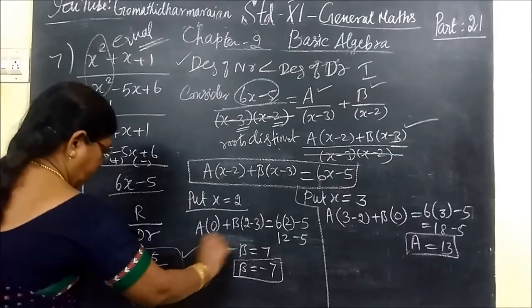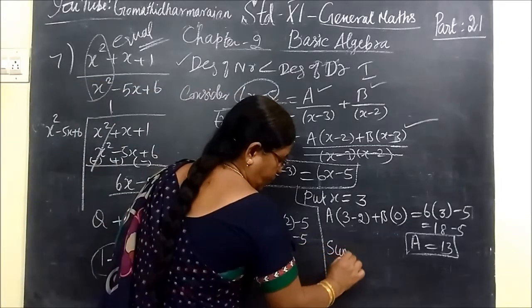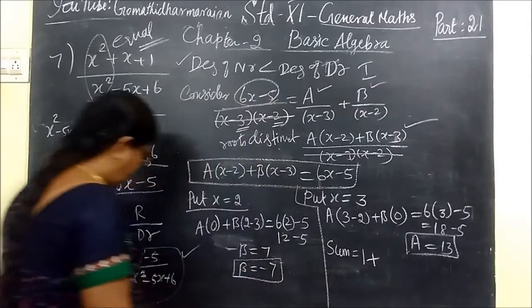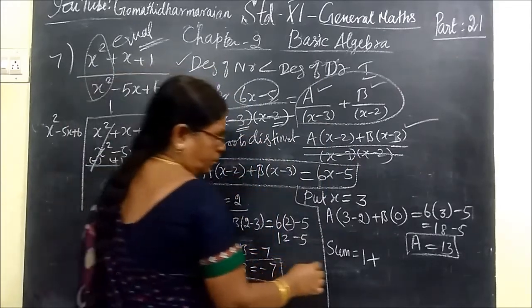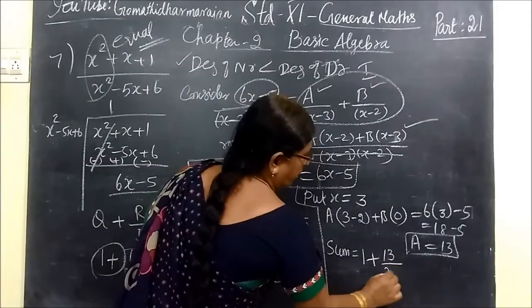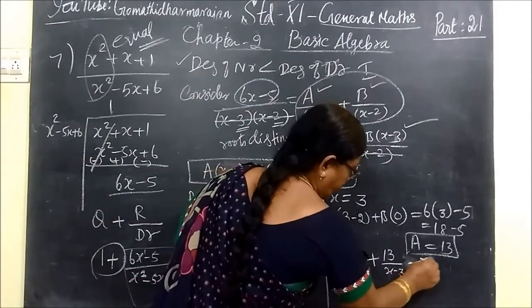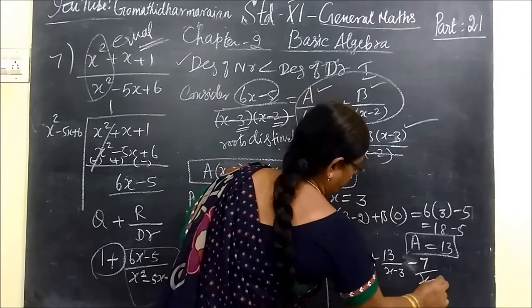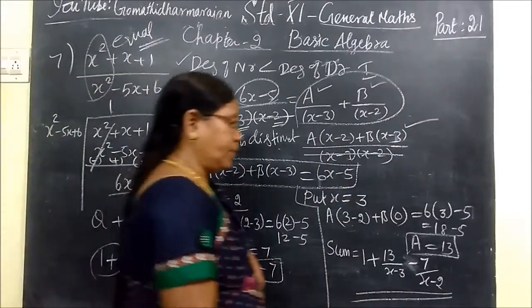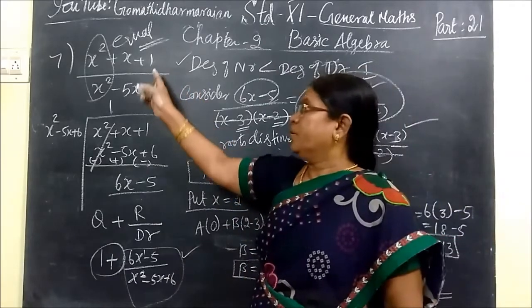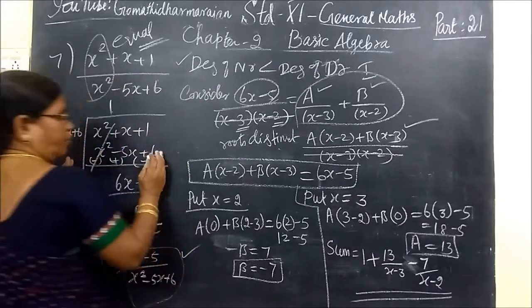So two values you substitute here. The sum equal to 1 plus, for A you substitute 13 by x minus 3, then for B you write minus 7 by x minus 2. So this is the answer for this. This is very easy problem. Only thing you keep in mind, degree of numerator should be less than degree of denominator. After that you make the same and do the problem.